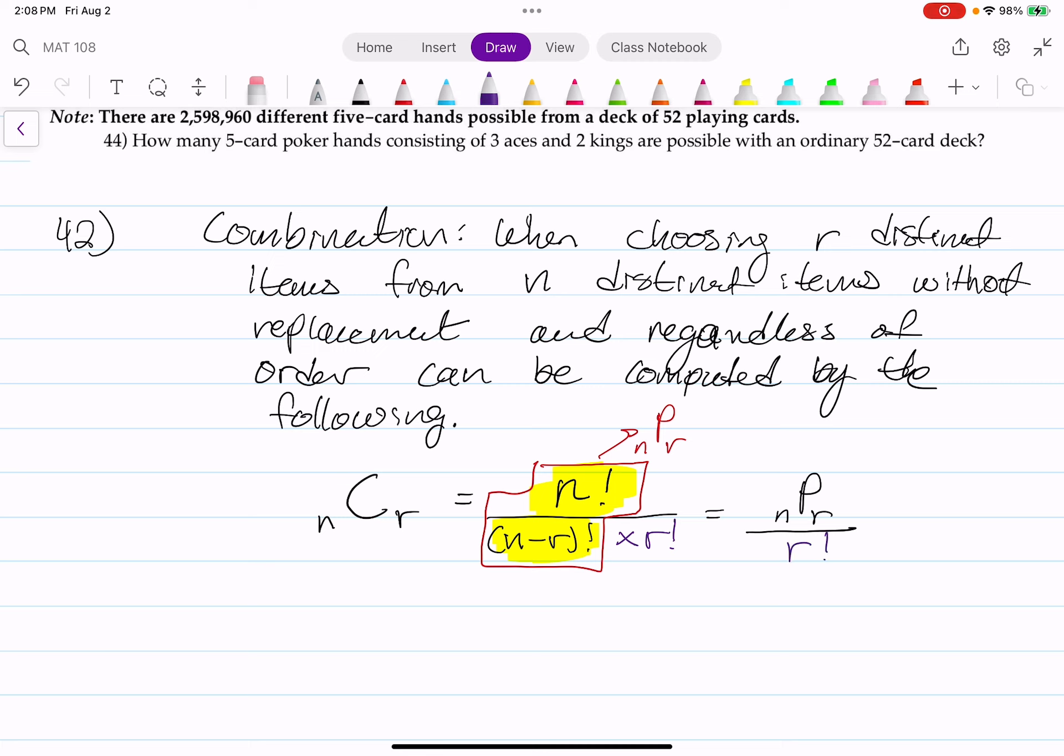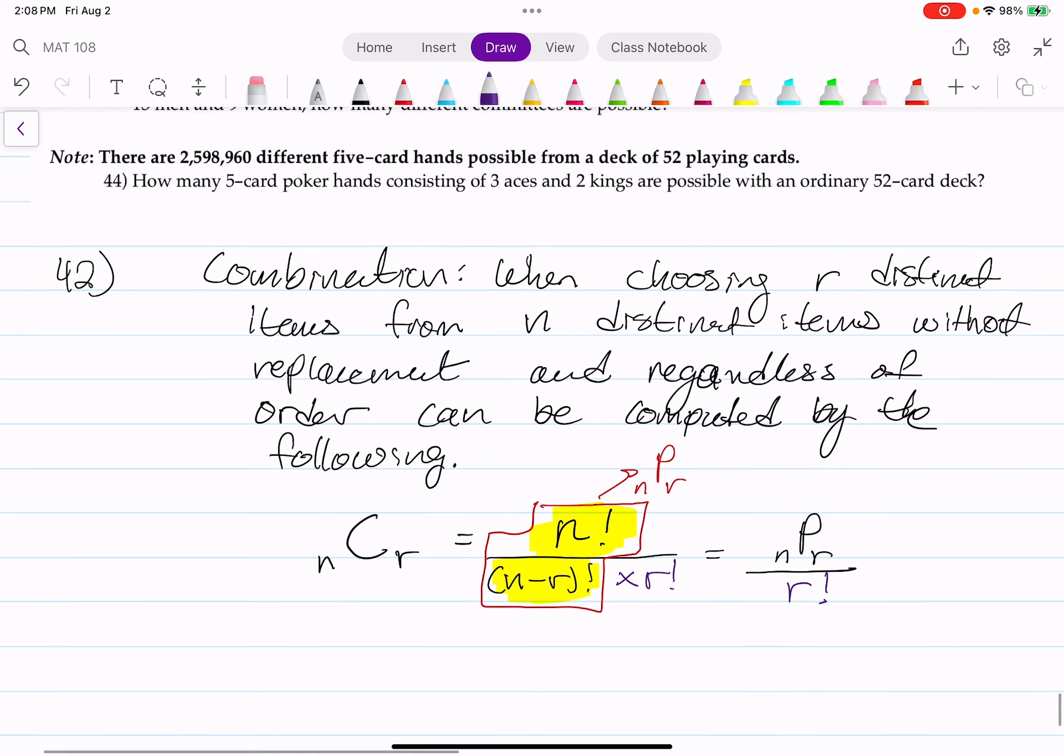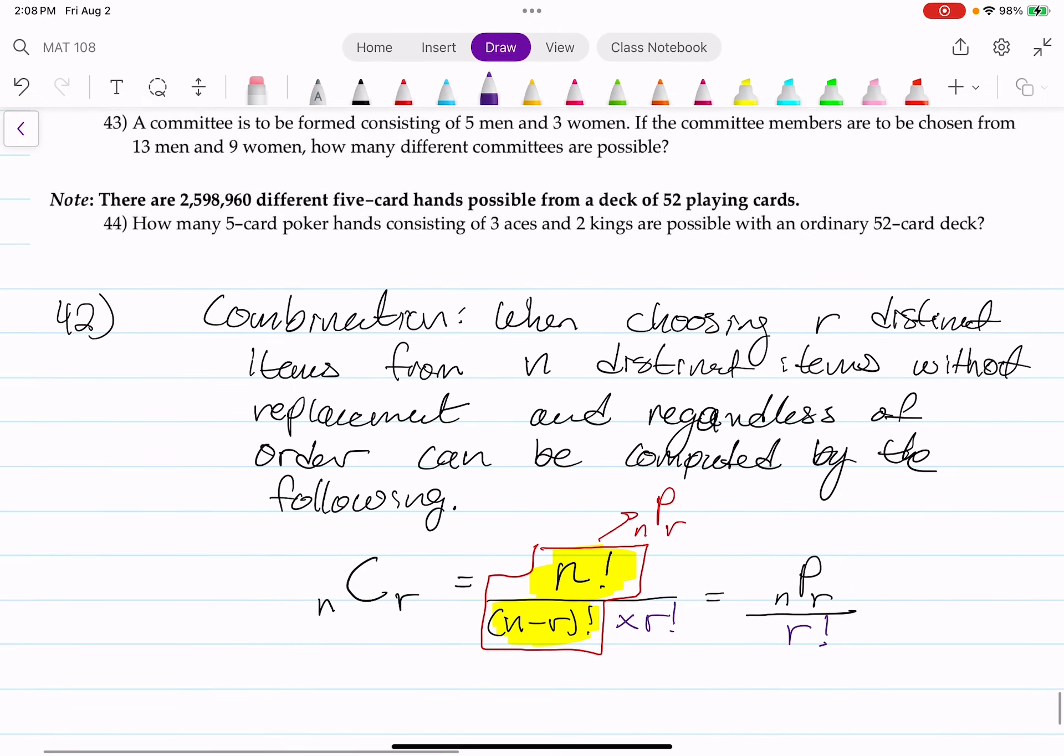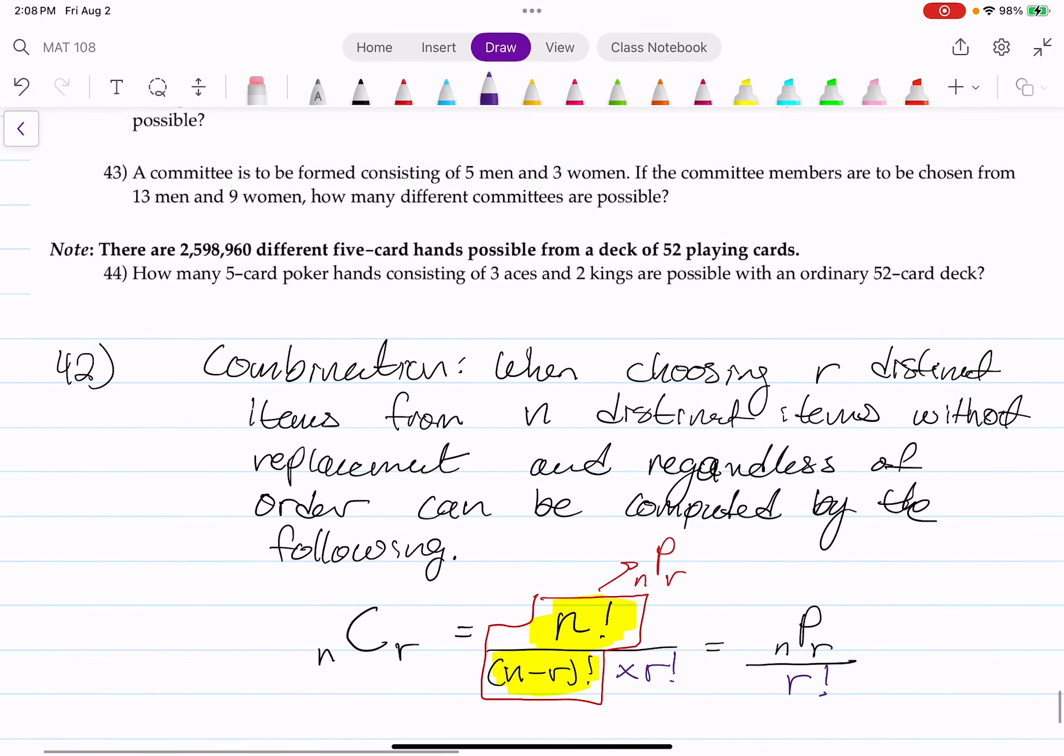That r factorial removes the order. Divided by that factorial r is a way to eliminate the fact that the order matters. So in this question 42, I am going to actually do it in three different ways. And 43 and 44, I'm using the calculator specifically to get the combinations.